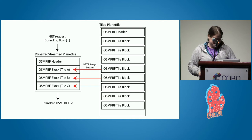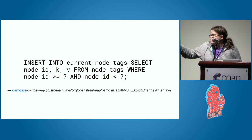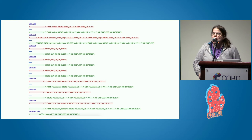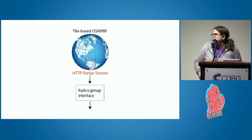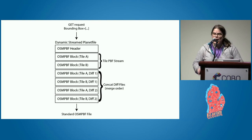The problem is you're going to have to duplicate nodes — but check it out: you can add this patch to osmosis, and duplication isn't a problem anymore. It's 'on conflict, do nothing.' And imagine if we had this tile-based OSM PBF — what we could do if we just add some CGI map interface on top of it. We could even store diffs from multiple data sources. Mic drop.